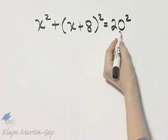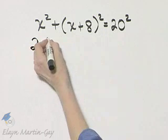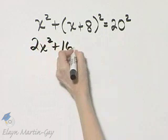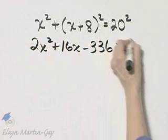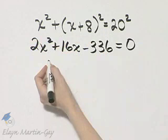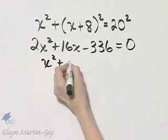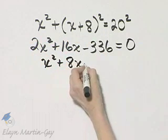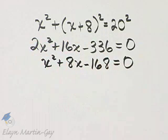If you square the binomial, subtract 400 from both sides, you'll have 2x squared plus 16x minus 336 equals 0. And then there's a common factor here of 2, which I will divide through. Each term, I'm dividing by 2. So that's x squared plus 8x minus 168 equals 0.